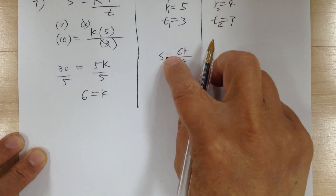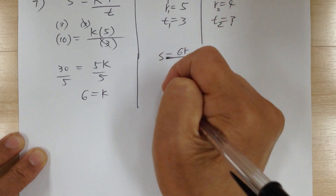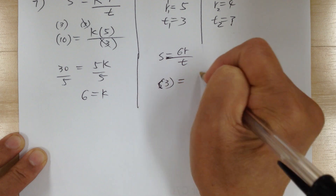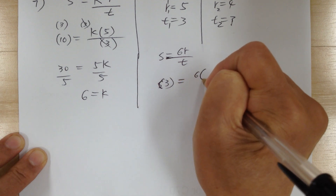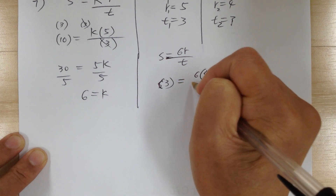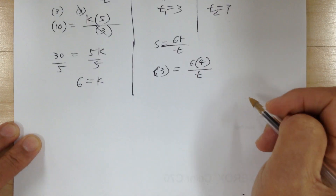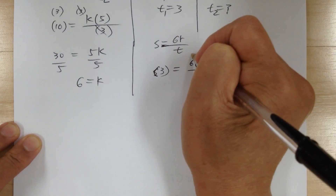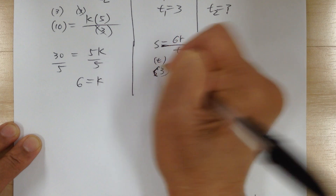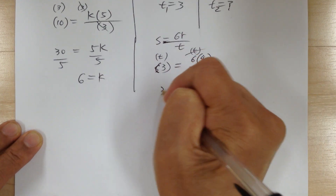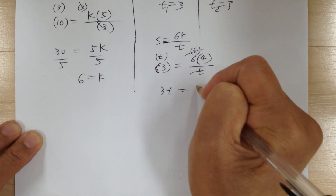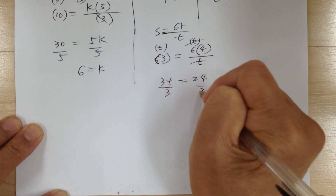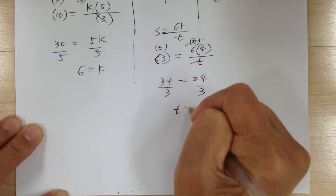Use the equation to solve. S equals 3, so substitute: 3 equals 6 times 4 over t. Get rid of the fraction by multiplying by t — this cancels out. You get 3t equals 24; divide both sides by 3. So t equals 8.